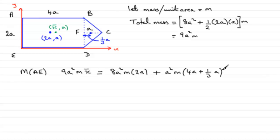Now I can see that there's an A squared M in each of these terms, so I could cancel that part out. So we'll take that out. And what else have we got? Well, we've just got 9X bar here, 9X bar equals, and for this we've got 8 times 2A, so we've got 16A.